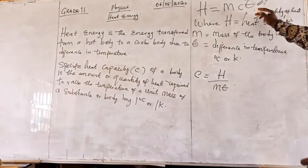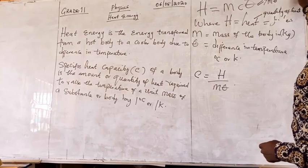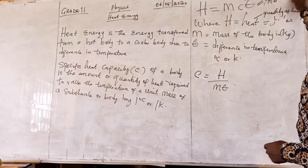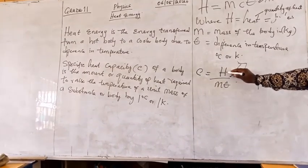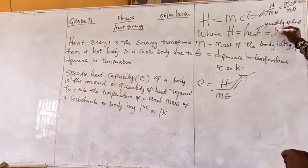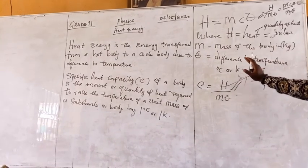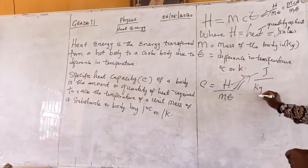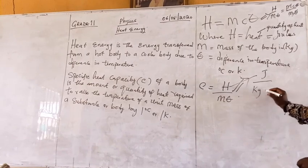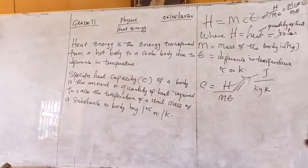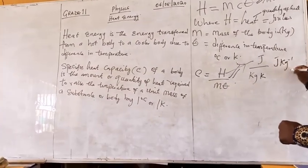If I divide both sides by Cθ, I'll have H/(Cθ) equals m. The unit of heat is in joules. Mass is measured in kg, and theta, which is the difference in temperature, is measured in degree Celsius or Kelvin. So the unit of specific capacity is joules per kilogram per Kelvin, which is J/(kg·K).